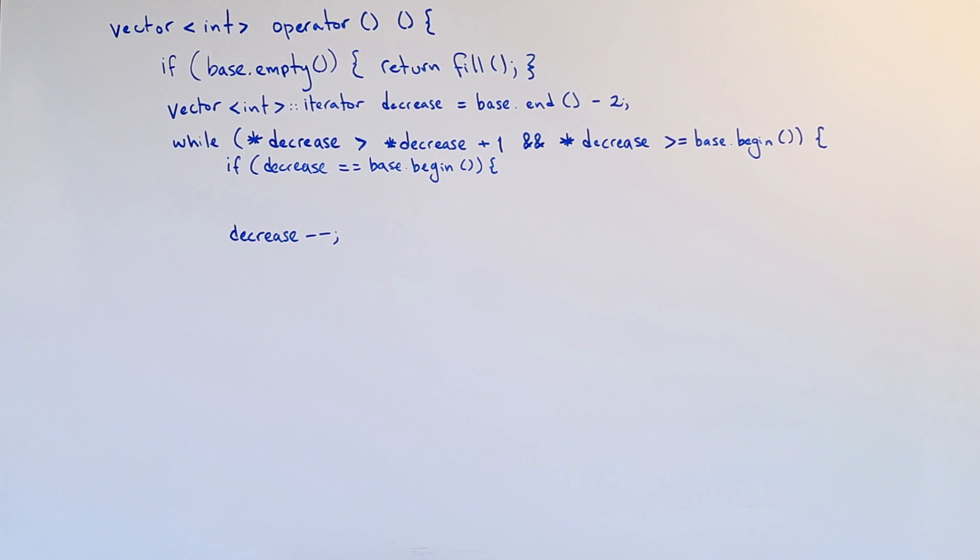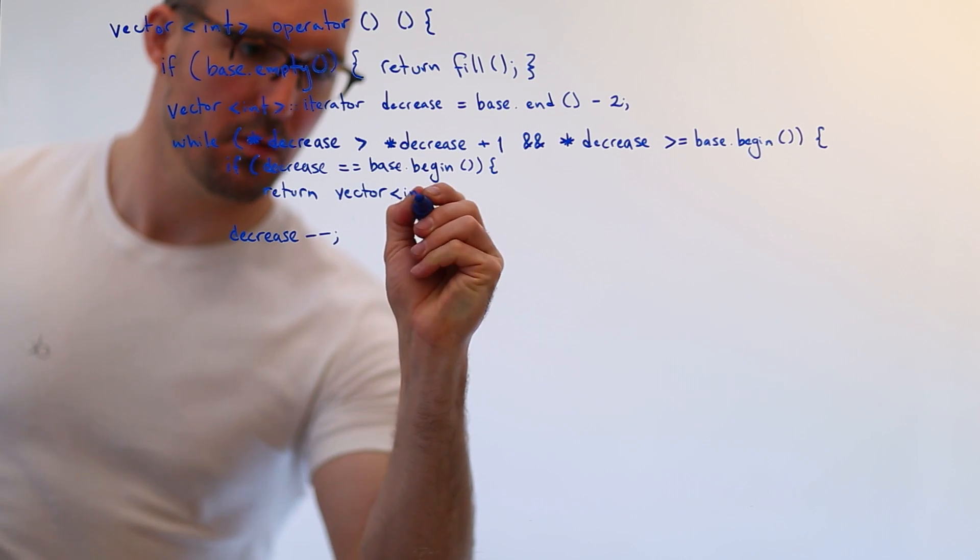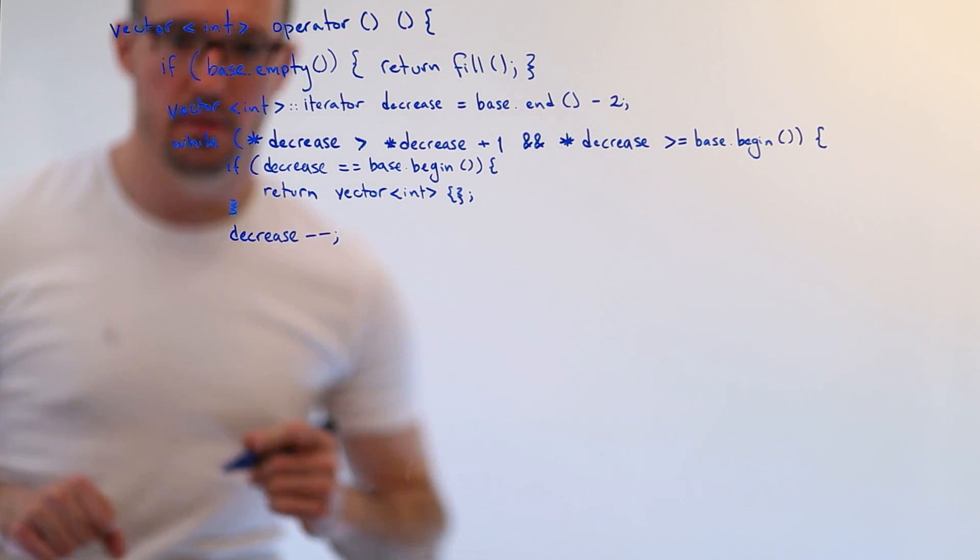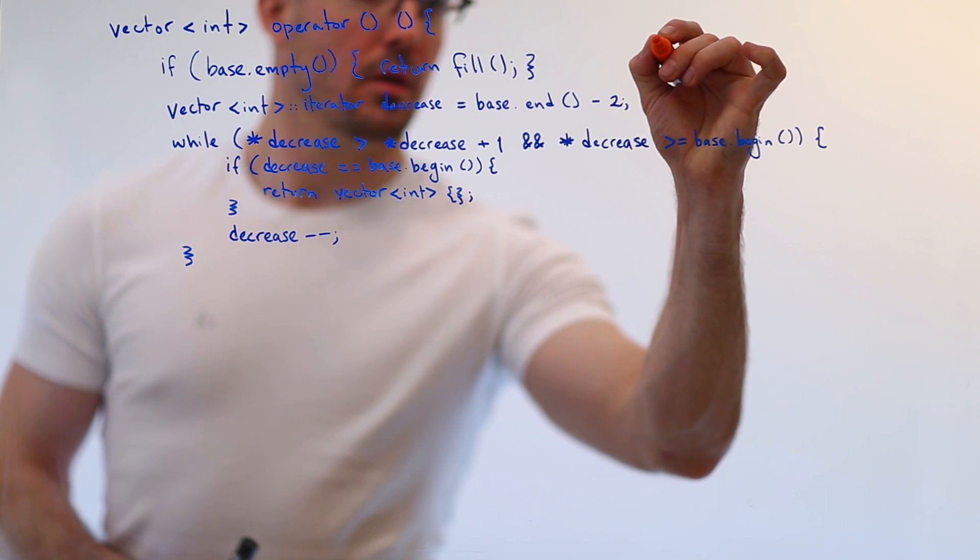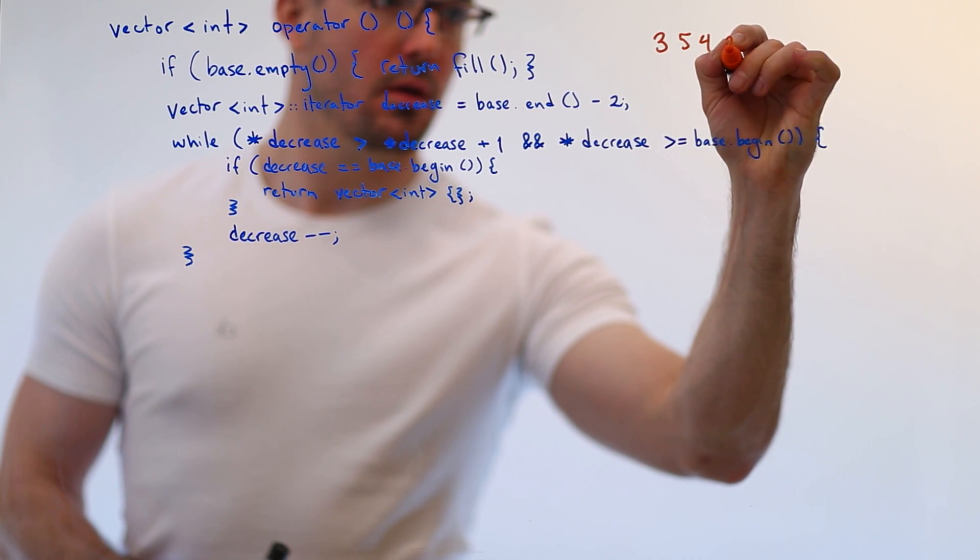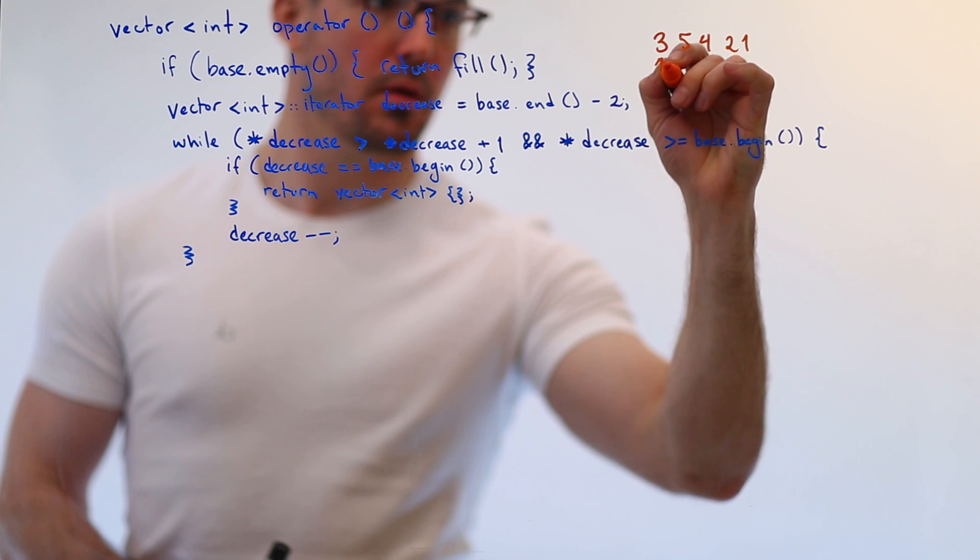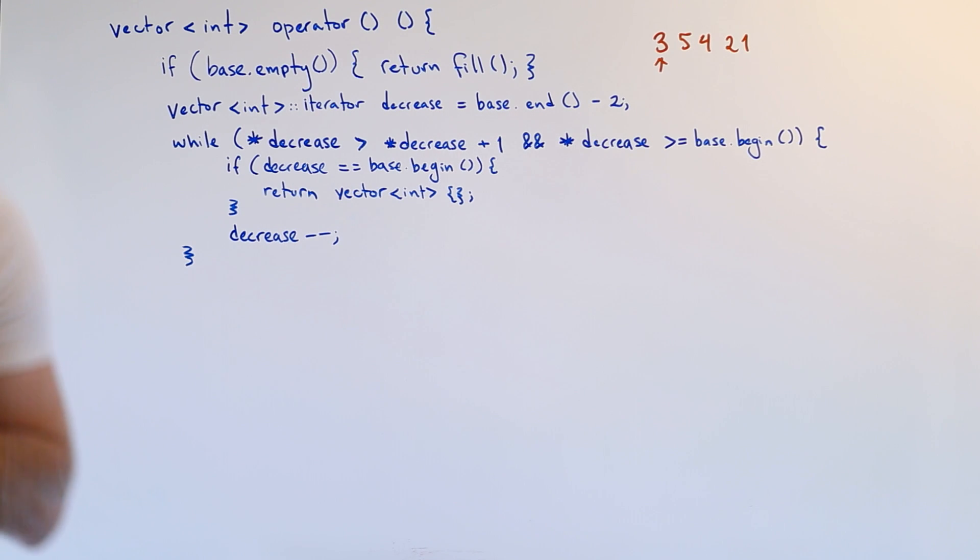So one thing we could do here is we could throw, let's keep it real simple for the whiteboard and say, let's just return an empty vector. So if we're here, we can assume that decrease is at the point in the vector where the number has gone down. So if we think back to our example case of three, five, four, two, one, we can be sure that decrease is at three.